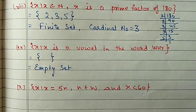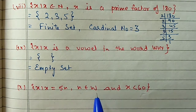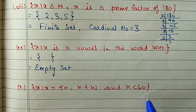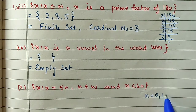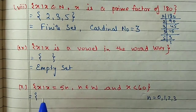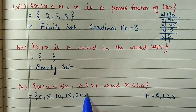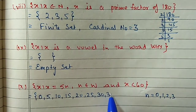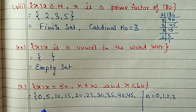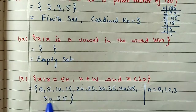Part (x): {x such that x = 5n, n is a whole number, x < 60}. Whole numbers start from 0. The multiples of 5 starting from 0 are: 0, 5, 10, 15, 20, 25, 30, 35, 40, 45, 50, 55 - only less than 60, so we stop at 55. We have a countable number of elements, so this is a finite set.